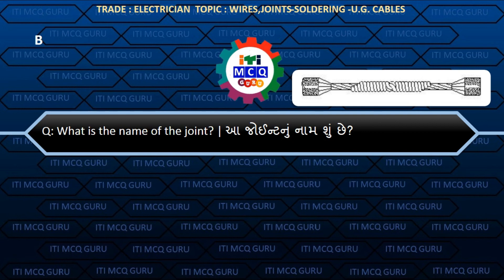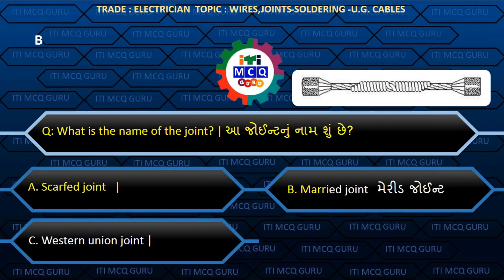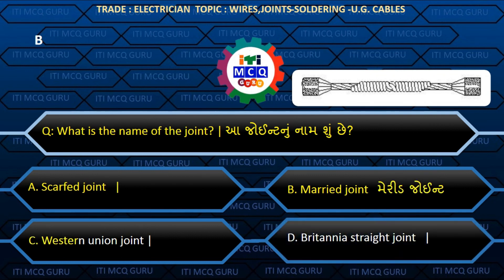What is the name of the joint? (A joint noo naam shun chhe?) Answer B: Married joint.